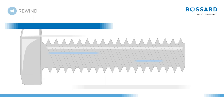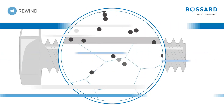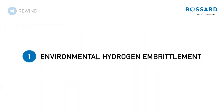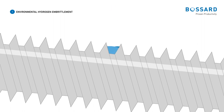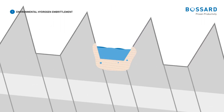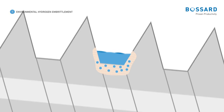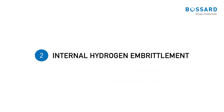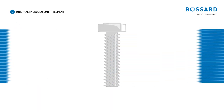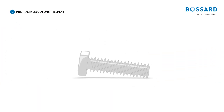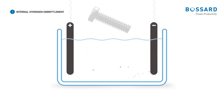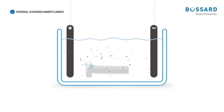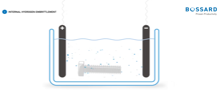Hydrogen embrittlement can be divided into two types. Environmental hydrogen embrittlement, where failure is due to the supply of hydrogen from the environment, normally through corrosion. And internal hydrogen embrittlement, where failure is due to the supply of hydrogen during manufacturing — for example, the cleaning and plating processes.